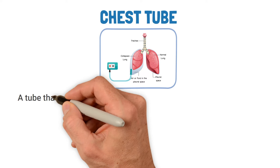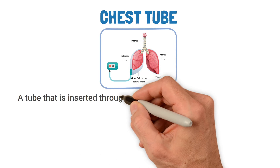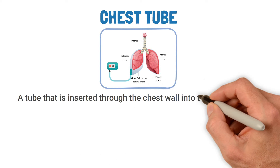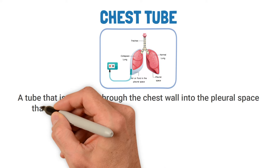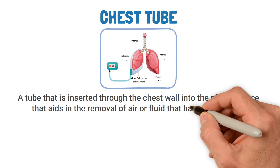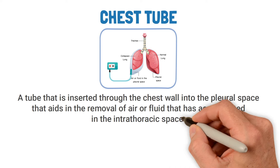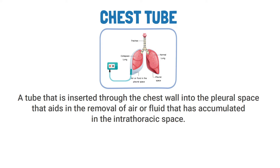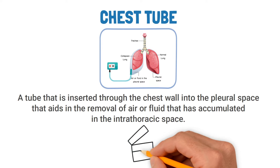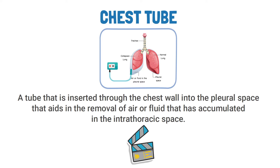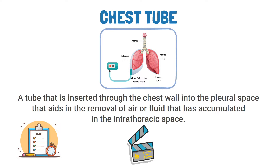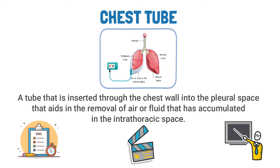A chest tube is a tube that is inserted through the chest wall into the pleural space that aids in the removal of air or fluid that has accumulated in the intrathoracic space. In this video we're going to break down a sample TMC practice question on this topic, so if you're ready, let's get into it.